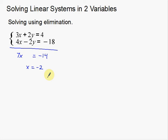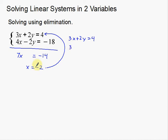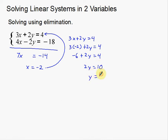Just like substitution, whenever you figure out what one of the variables is, you simply plug it back into one of your original equations. In this case, we can plug it back into either one — I'd use the one that's easiest. The top one has smaller numbers and no negatives, so I'll use that one. So 3x plus 2y equals 4 becomes 3 times negative 2 plus 2y equals 4. Negative 6 plus 2y equals 4.